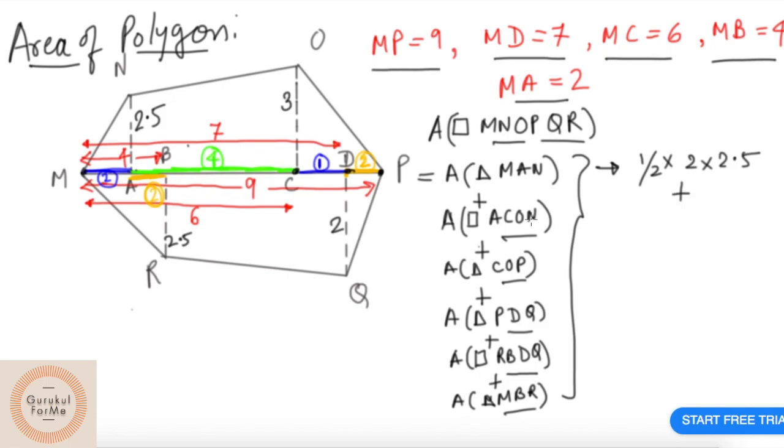What is ACON? Half into sum of the parallel sides, which is AN, 2.5 plus 3, into height. What is the height here? AC, which is 4.